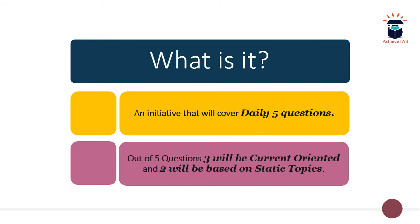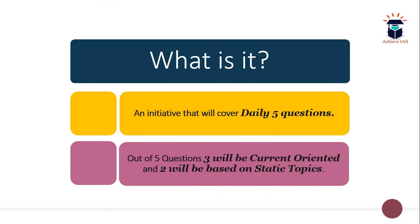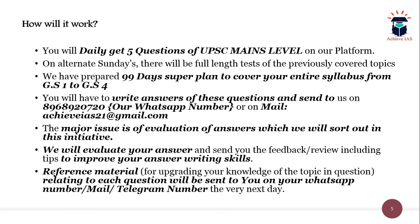We don't give random static questions — we follow a detailed timetable, a 99-day super plan covering the entire syllabus from GS1 to GS4. That's why today's fourth and fifth questions are from these topics and tomorrow's target has been told in advance. We will share this detailed timetable with you when you join us. Daily five questions are given, and on alternate Sundays we take full-length tests on previously covered topics.